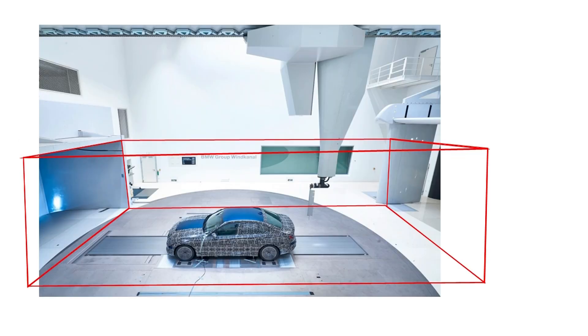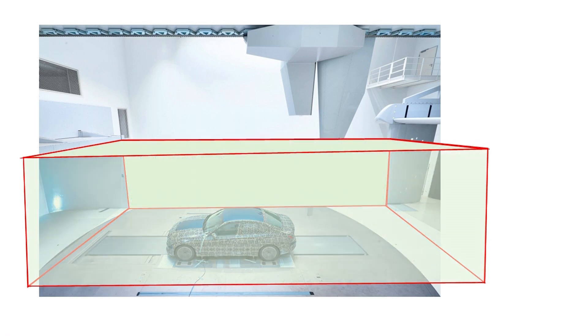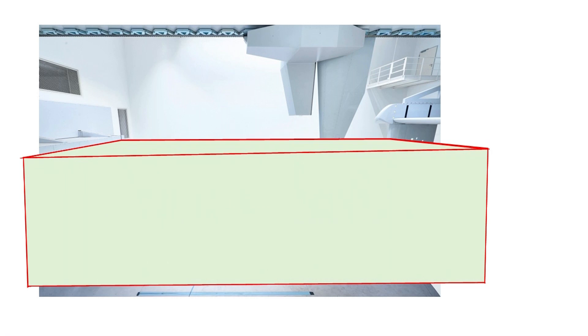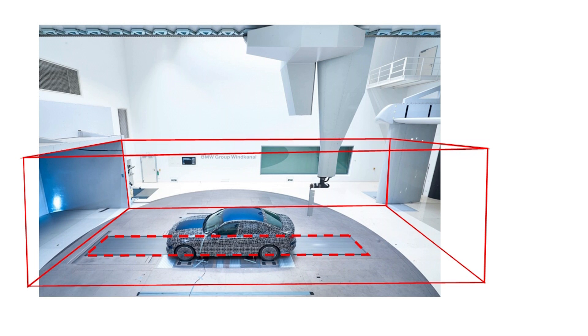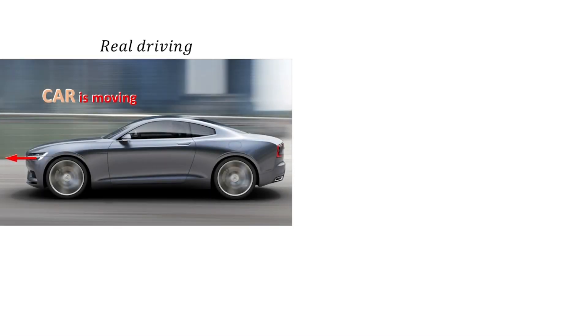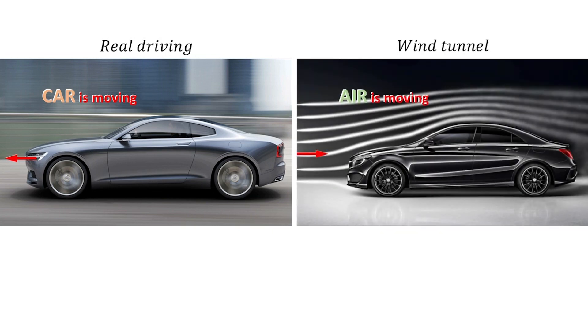Similarly, for the vehicle aerodynamic modeling, we can apply the free-slip wall boundary condition to the top and lateral side boundaries, since we do not expect flow to pass through these boundaries and no boundary layer should form along them. Notice that the wind tunnel is equipped with a moving belt in this region. The function of the moving belt is to eliminate velocity gradients. In a real driving situation, the car is moving through still air, whereas in the wind tunnel test the car is stationary while the surrounding air is moving.